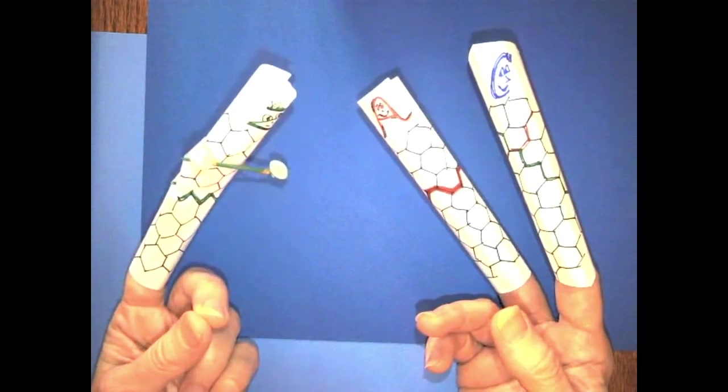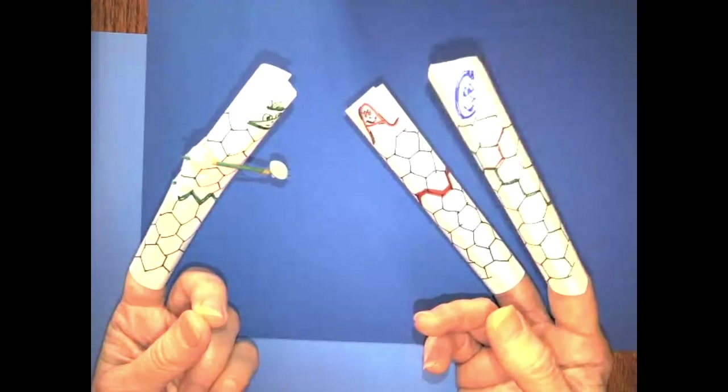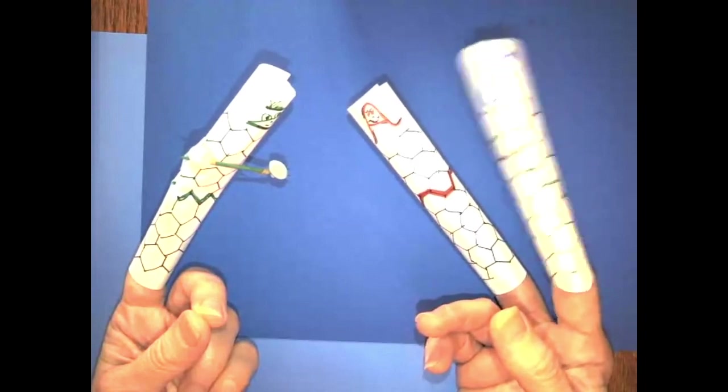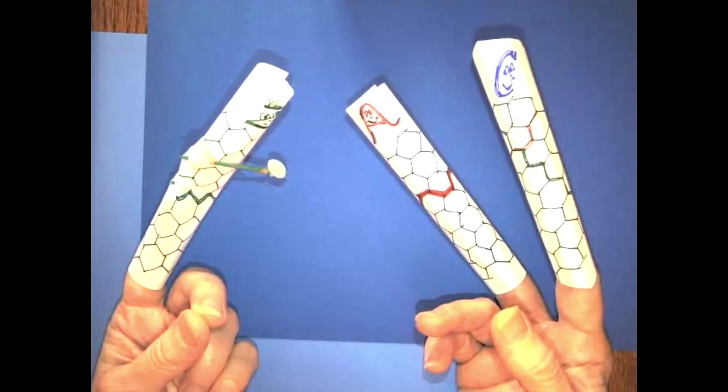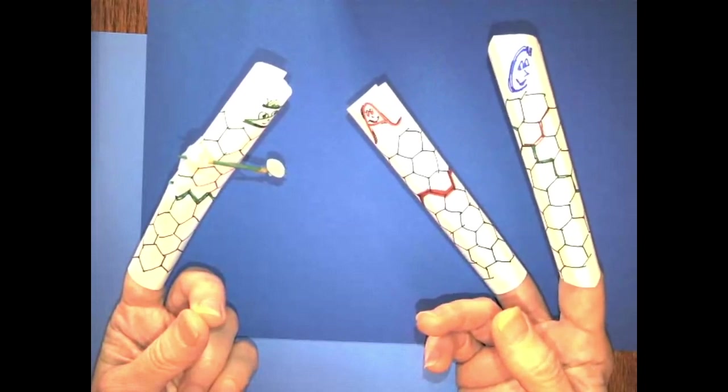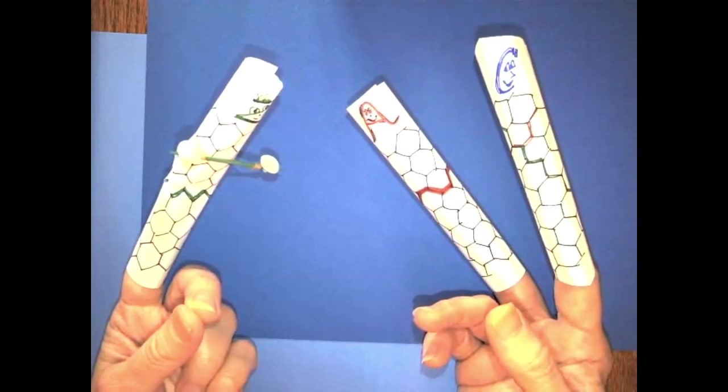Well, it sure is. Carbon nanotubes can be spun into special kind of yarns and fabrics that are super strong and lightweight. Scientists and engineers have used them on the Juno spacecraft that traveled all the way to Jupiter. The carbon nanotube sheets protected the delicate components against electrostatic discharge.